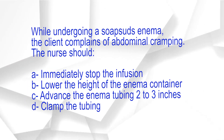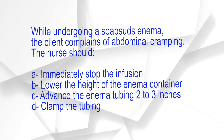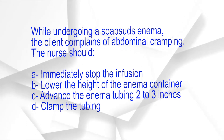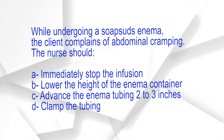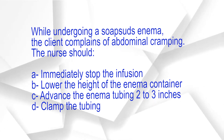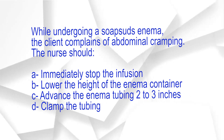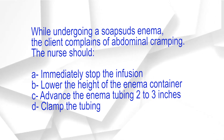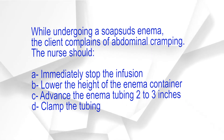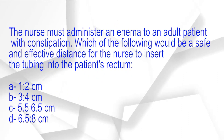While undergoing a soap suds enema, the client complains of abdominal cramping. The nurse should: A. Immediately stop the infusion. B. Lower the height of the enema container. C. Advance the enema tubing 2 to 3 inches. D. Clamp the tubing. The correct answer is option B: Lower the height of the enema container.